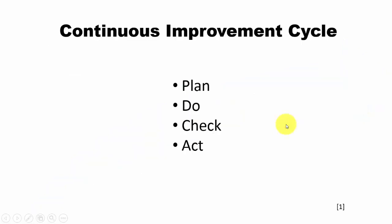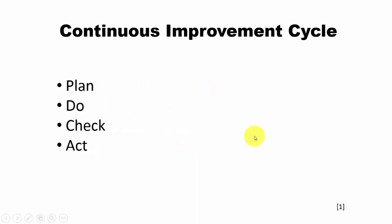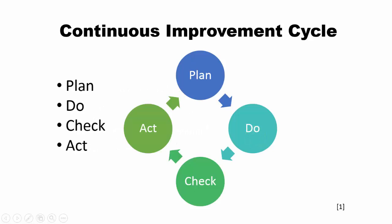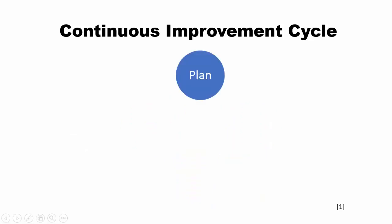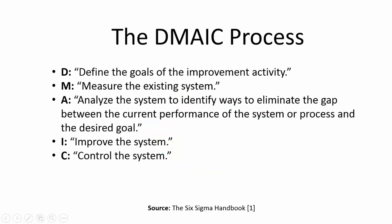Quite often I see lists that look like a 'continuous improvement cycle,' but you don't really see a cycle in a bullet list. Why not get rid of the list and have an image that actually looks like a cycle? Even better, why not animate it so you can talk about each item one at a time — Plan, Define, and so on.